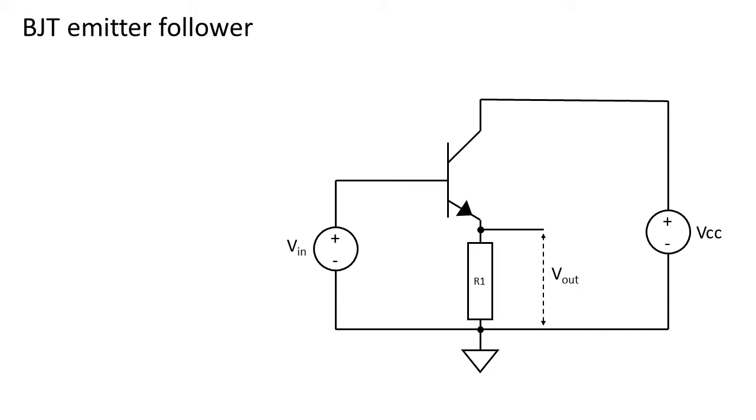At the emitter of the transistor is a resistor placed to ground. The buffered signal will appear across the resistor as VOUT.